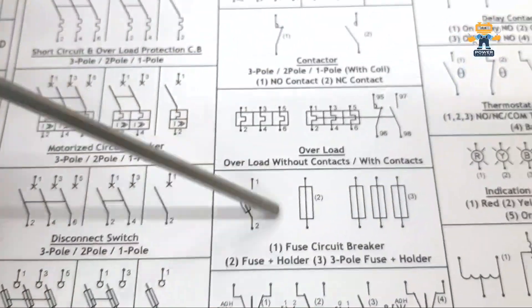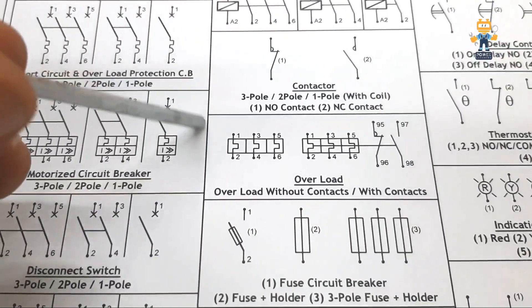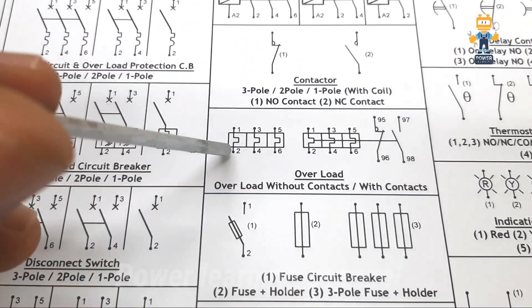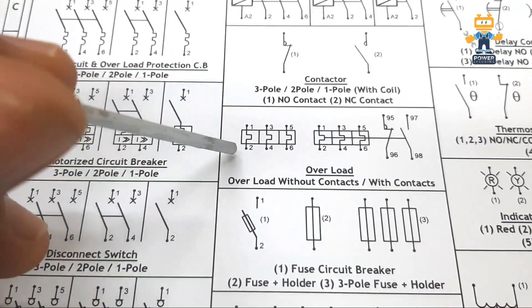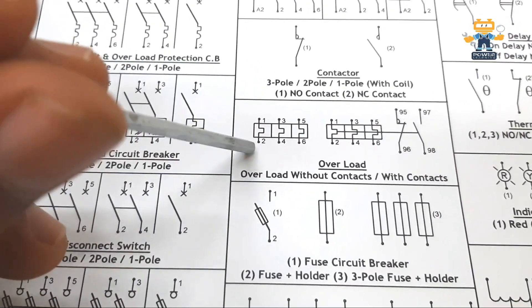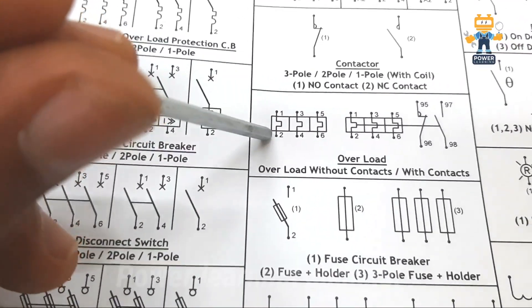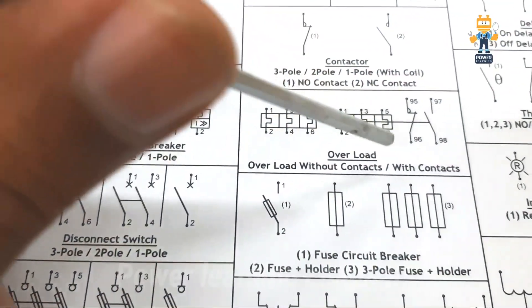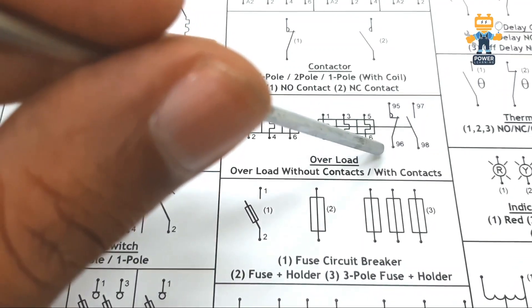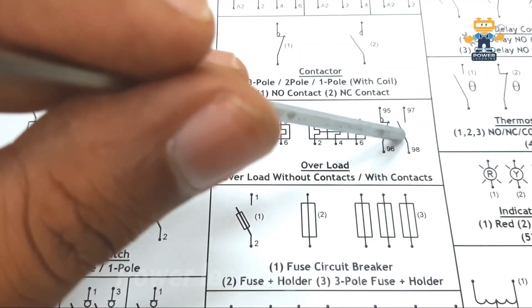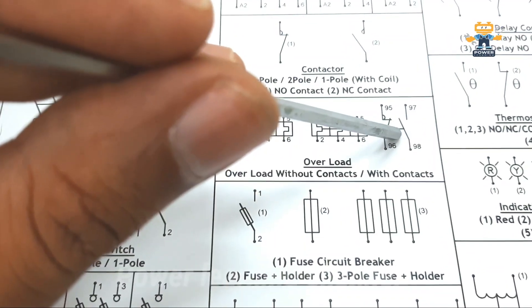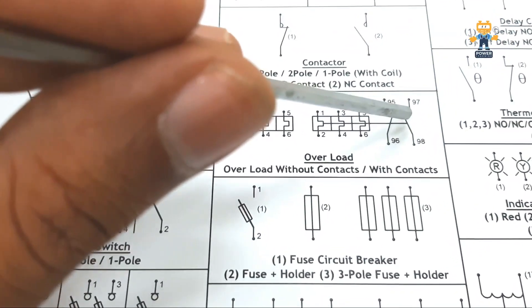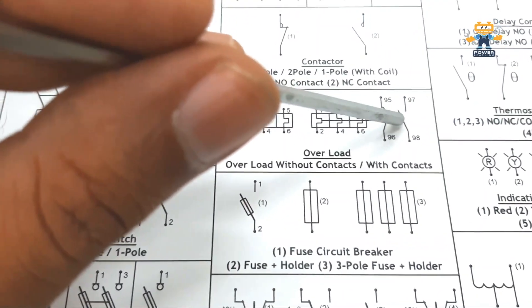This is the overload symbol. Overload relays are used with magnetic contactors in starters. This is a simple overload without auxiliary contacts, and this is an overload with auxiliary contacts — when the overload trips, it gives us a signal. Normally we use the normally closed contact for circuit disconnect, and this normally open contact for connecting an indication lamp when the overload trips.